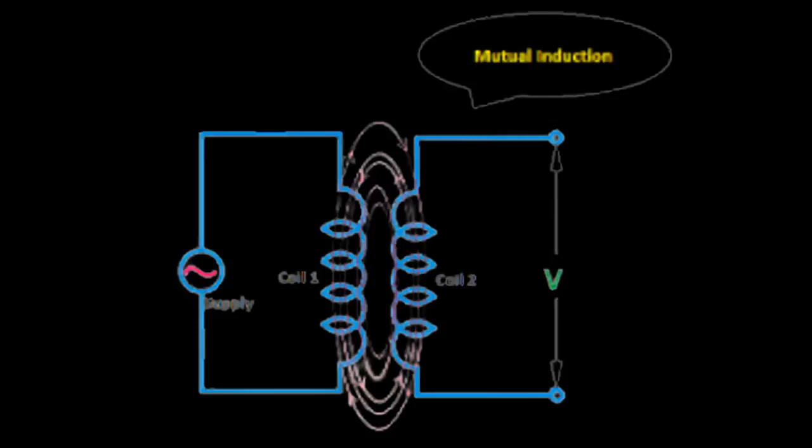When a primary winding is connected to an alternating voltage source, alternating magnetic flux is produced around the winding.